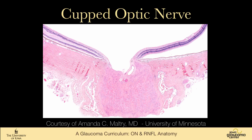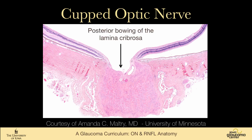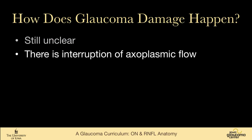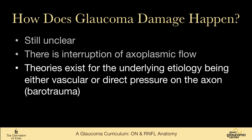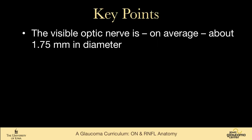This histopathology of a cupped optic nerve shows thinning of the retinal nerve fiber layer and ganglion cell layers, and posterior bowing of the lamina cribrosa. How does glaucoma damage happen? It's still not totally clear. There is interruption of axoplasmic flow. Theories for the underlying etiology include either a vascular etiology or direct pressure on the axons. Many feel that damage at lower pressures is more likely vascular in origin, while damage at higher pressures is more likely barotrauma, with everything in between perhaps a combination of both.